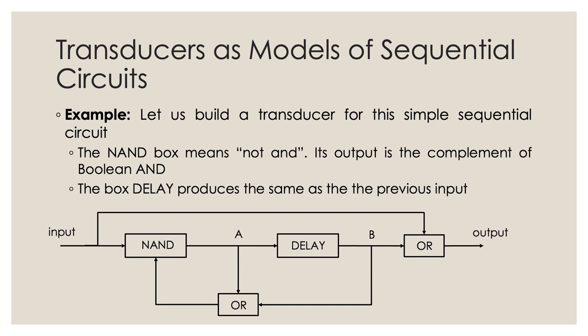Let's look at this particular sequential circuit and try to build a transducer — a Mealy machine, a finite automata with output. The input goes to a NAND gate, and another branch from the input goes to the output. From the NAND gate it goes to a delay gate, and another fork goes back into an OR gate which feeds back into the NAND. From the delay, one branch goes to the OR and another branch goes back, so there is a feedback loop.